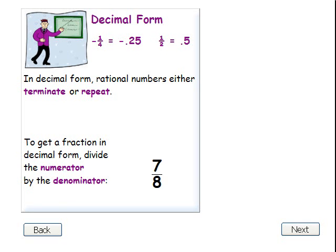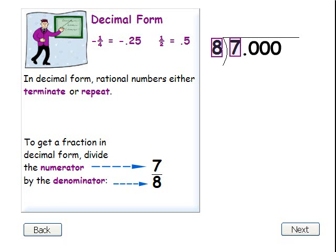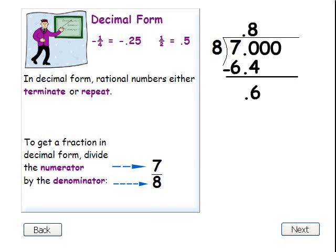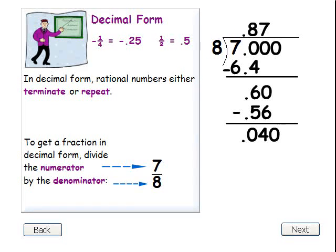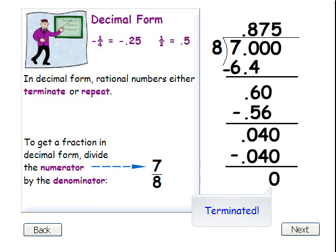In decimal form, rational numbers either terminate or repeat. For example, the fraction seven-eighths terminates when it's in decimal form. To get a fraction in decimal form, divide the numerator, seven, by the denominator, eight. Seven divided by eight: eight times eight is 64 — subtract. Seven times eight is 56 — subtract. Five times eight is 40 — subtract. Our remainder is zero, which terminates our division.